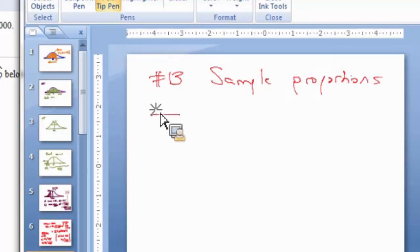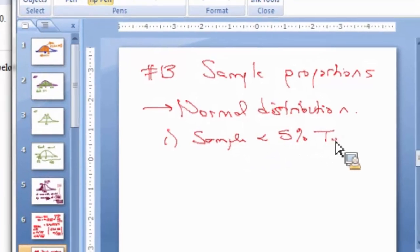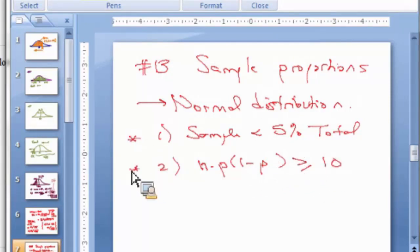We would like to use the normal distribution for our calculations. It turns out we need to check a couple of things. Number one, that our sample is less than 5% of the total. And the second one, we have to do this calculation: N times P times 1 minus P has to be more than 10. So these two conditions need to be met. If they're not met, then we're stuck, we have to stop.